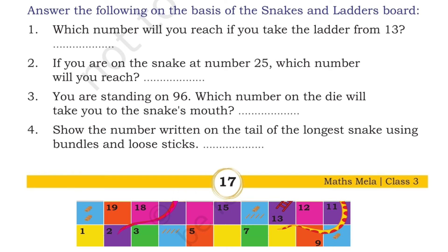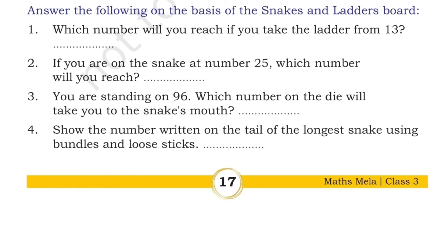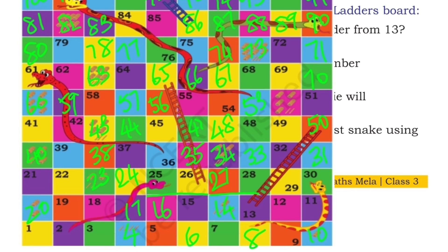First question: which number will you reach if you take the ladder from 13? If we take the ladder from 13, we check the board. Here is number 13 — see where the ladder reaches. From number 13, the ladder reaches to number 50.